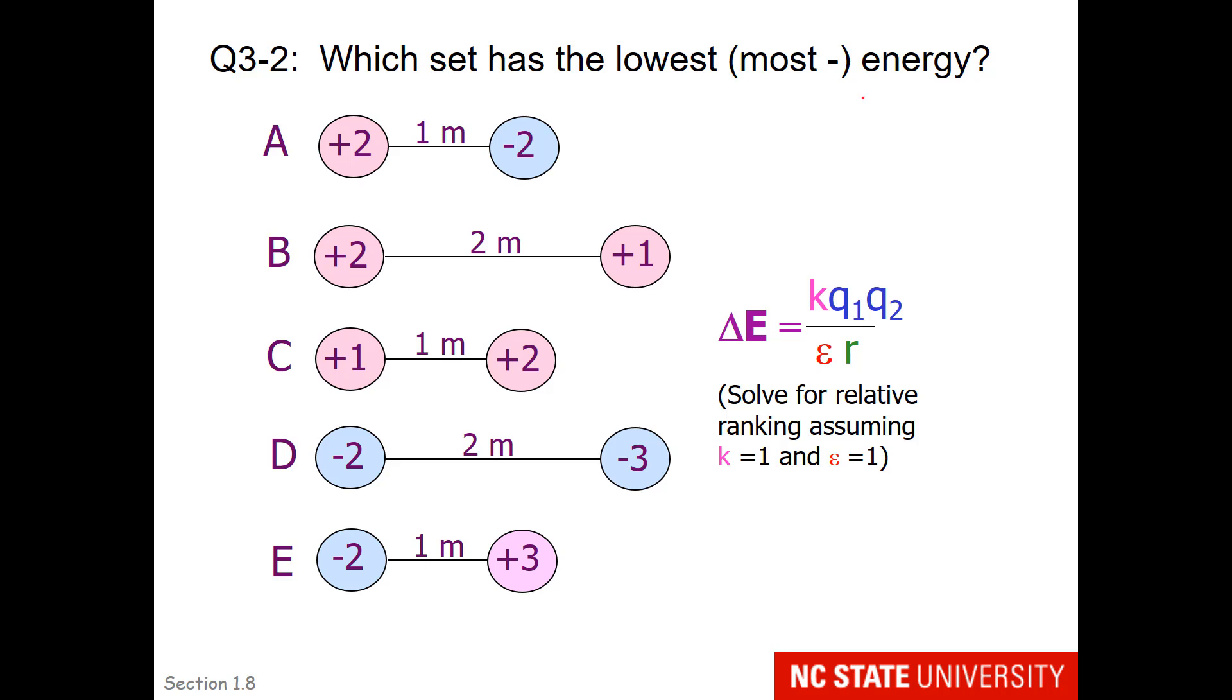The same approach can be used for the most negative energy. These are exactly the same set. So after you've done your calculation for the previous question, I know that you can pick the one that has the most negative relative energy.